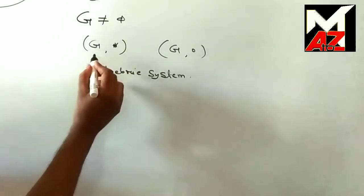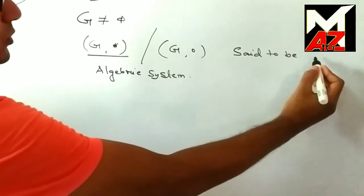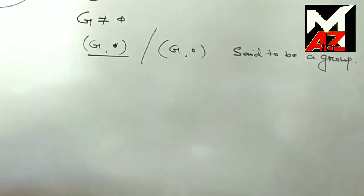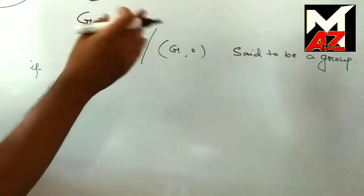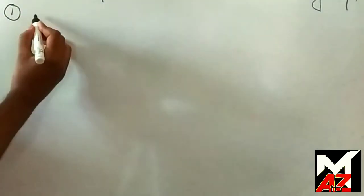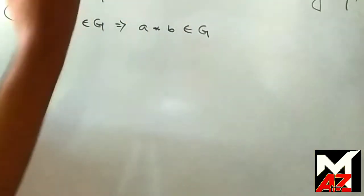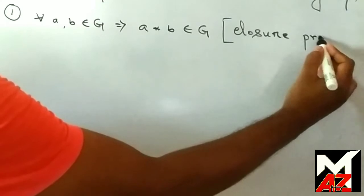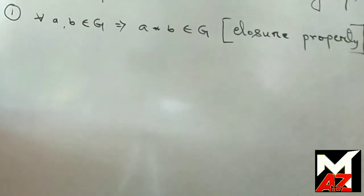This algebraic structure G star or G circle is said to be a group if the following properties are satisfied. The first property — Property 1: for all A, B belonging to G, A star B belongs to G. This is the closure property, and we say that G is closed under star.